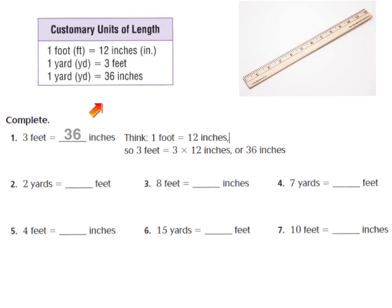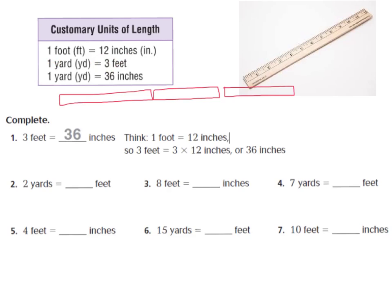Make sure you pay close attention to this little chart right here — it's going to help you in our homework assignment. The example shows that 3 feet is equal to 36 inches. By looking at our chart, we can see that 1 foot is equal to 12 inches. I went ahead and made 3 modeled rulers, and I know each ruler is equal to 1 foot, and each foot equals 12 inches. That is why 12 plus 12 plus 12 equals 36 inches.